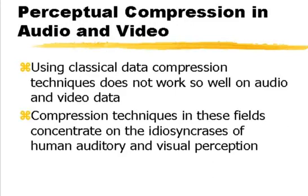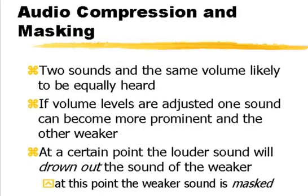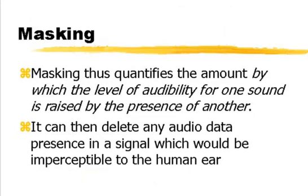Using classical data compression does not work so well on audio and video data. So the compression has to use the idiosyncrasies of the perceptual system, namely the human ear. This is what masking is: if two sounds of the same volume are played together, your ear will hear them both. But at a certain point, as one sound becomes higher than another, it is no longer audible — it will be masked — and the MP3 algorithm can eliminate that data. Masking thus quantifies the amount by which the level of audibility for one sound is raised by the presence of another, and it can then delete any audio data in a signal which would be imperceptible to the human ear.